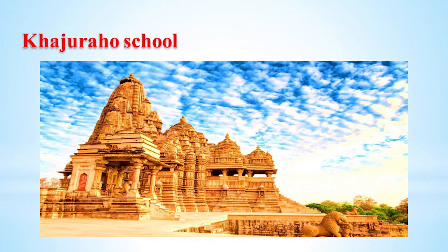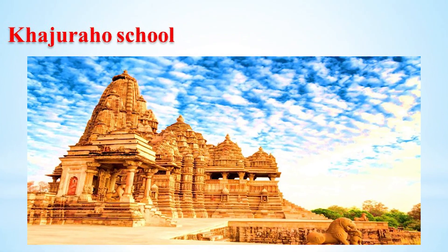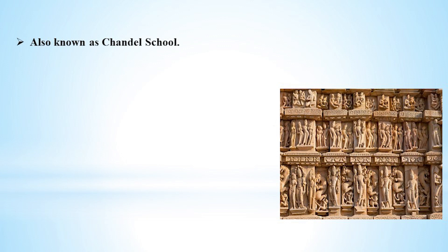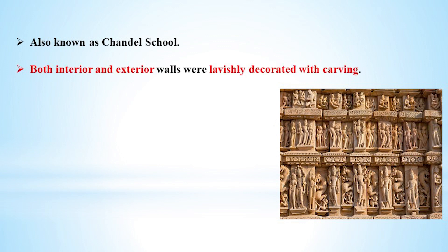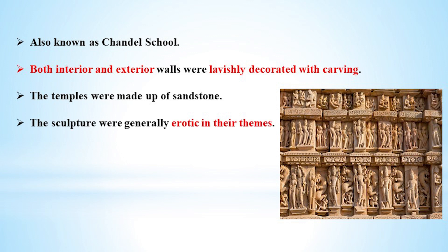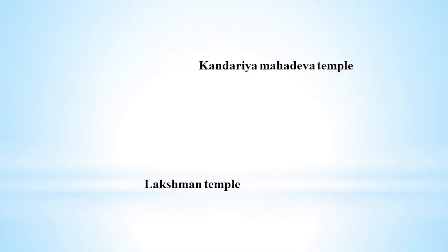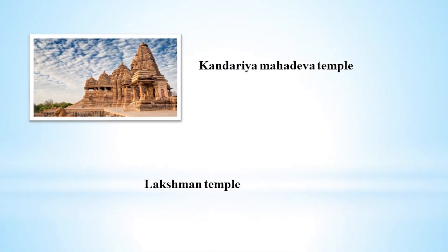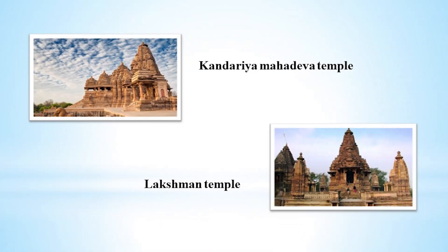The next school is the Khajuraho school, also known as the Chandel school. These temples are present mainly in the Madhya Pradesh region. The unique feature of the Khajuraho school is that both interior and exterior walls were decorated with carvings. The temples were constructed using sandstone, and the sculptures are generally erotic in nature, which is the main theme of the Khajuraho school.